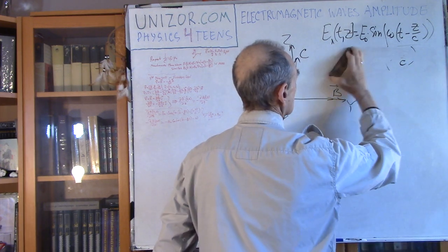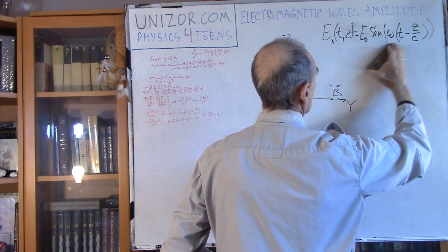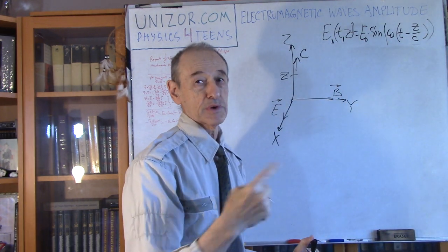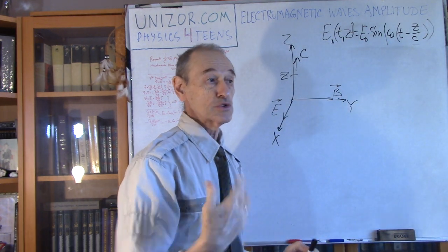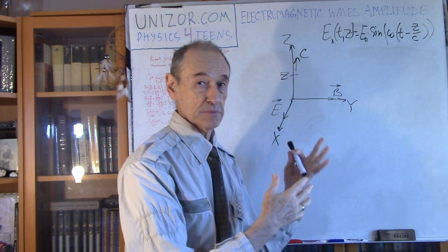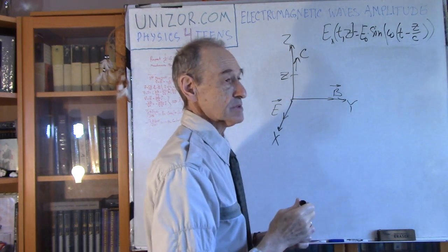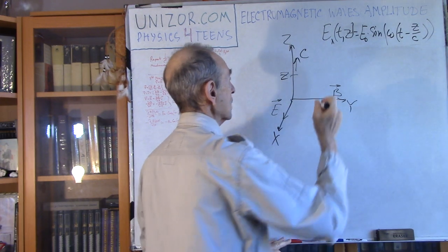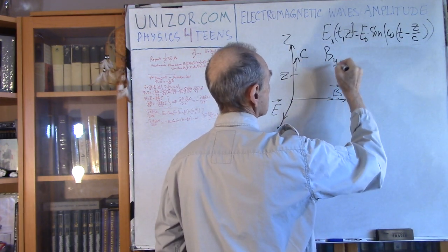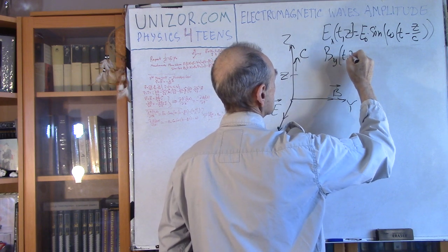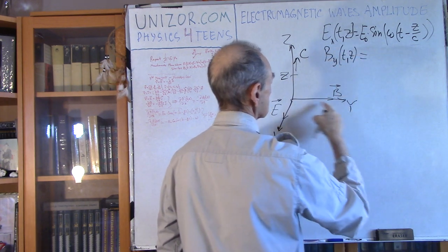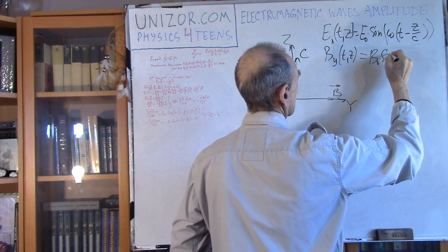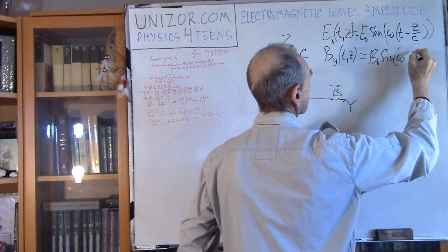The magnetic component By of t and z, according to the Maxwell equations in vacuum, would look exactly the same way: B0 times sine of omega t minus z over c. This formula was derived in the previous lecture as a solution to Maxwell equations in this simplest case.